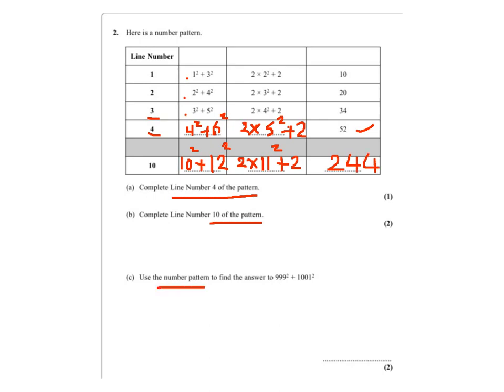Now we need to use the number pattern to find the answer to this. I can say that 999 squared plus 1001 squared will equal 2 times 1000 squared plus 2.